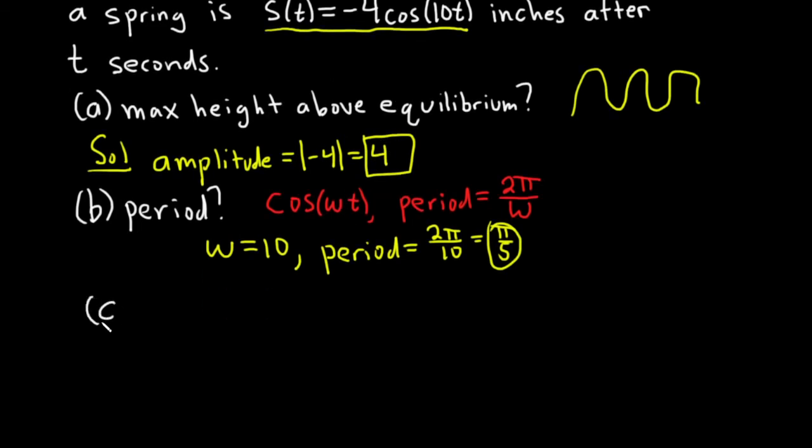Part c wants us to find what's called the frequency. So to find the frequency, you basically just flip the period. So if we flip the period, we get 5 over pi. So that would be frequency.